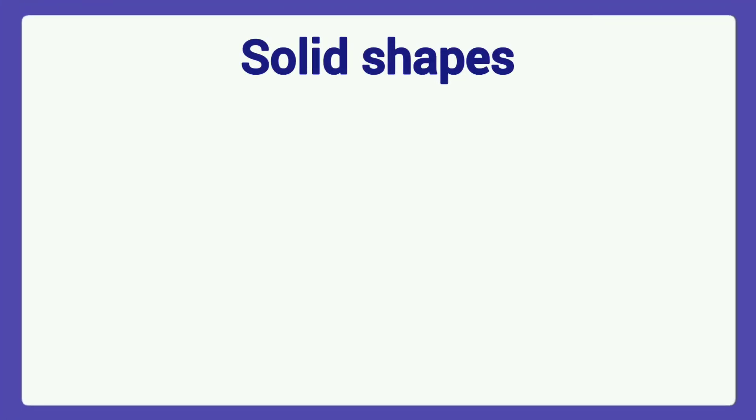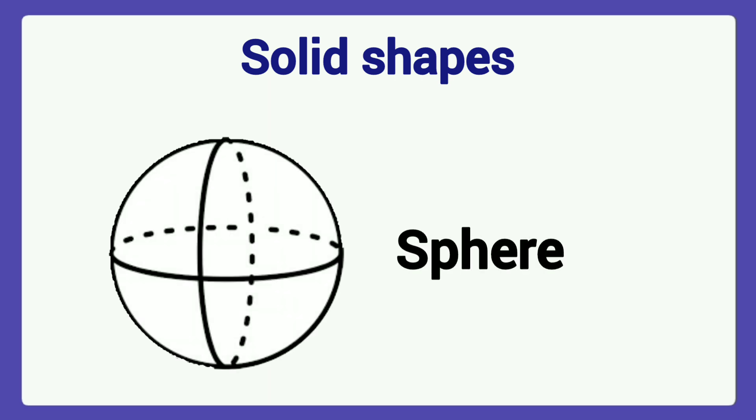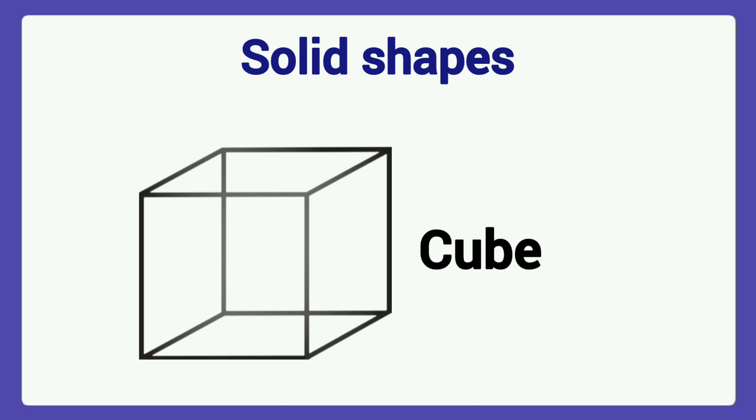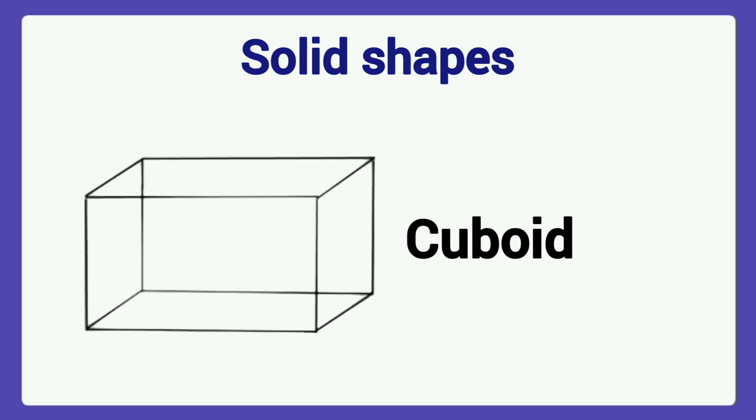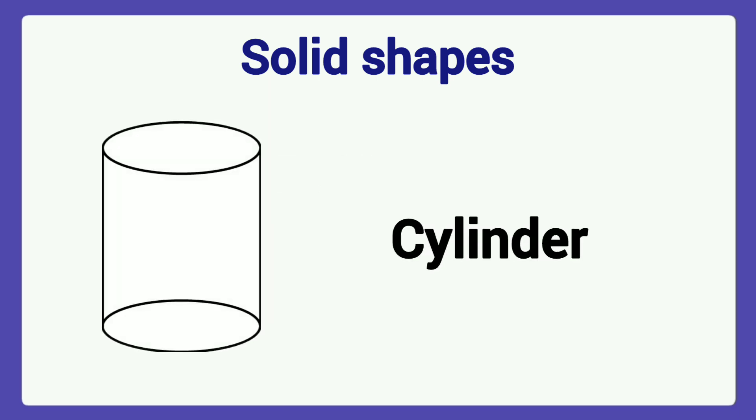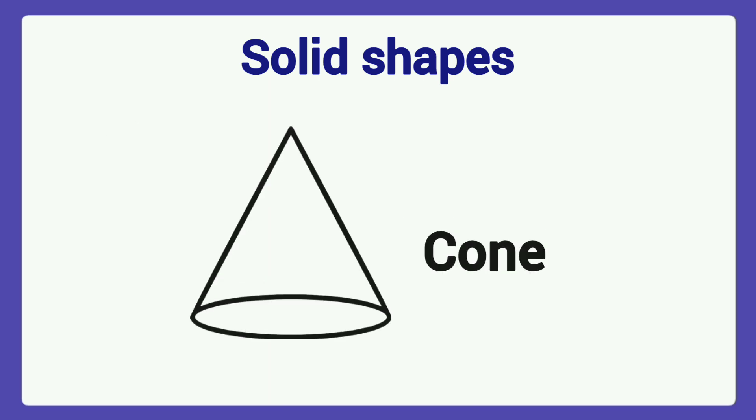Next, we learn some solid shapes names. First one, sphere. Next, cube. Cuboid. Cylinder. And cone.